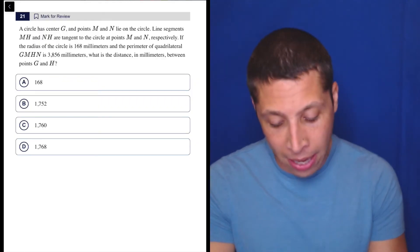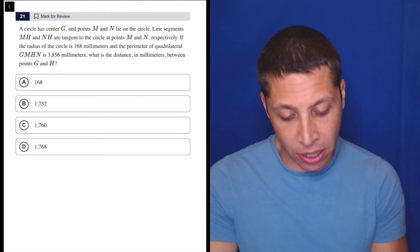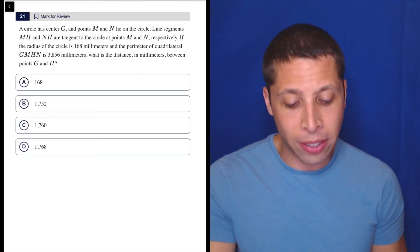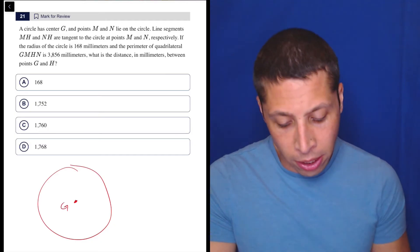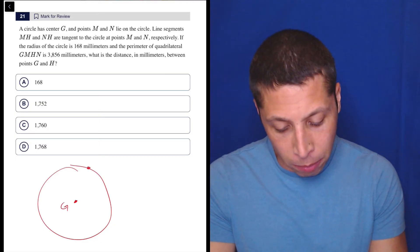So let's start with the simple first sentence here: a circle has center G and points M and N lie on the circle. So let's draw circle G, and here it is with the center, and then M and N, we can just put them here. Here's M, here's N.